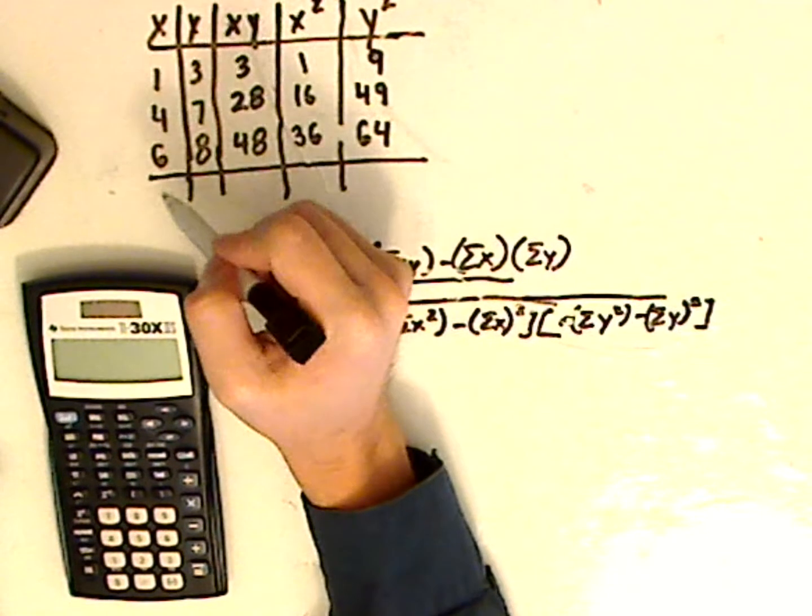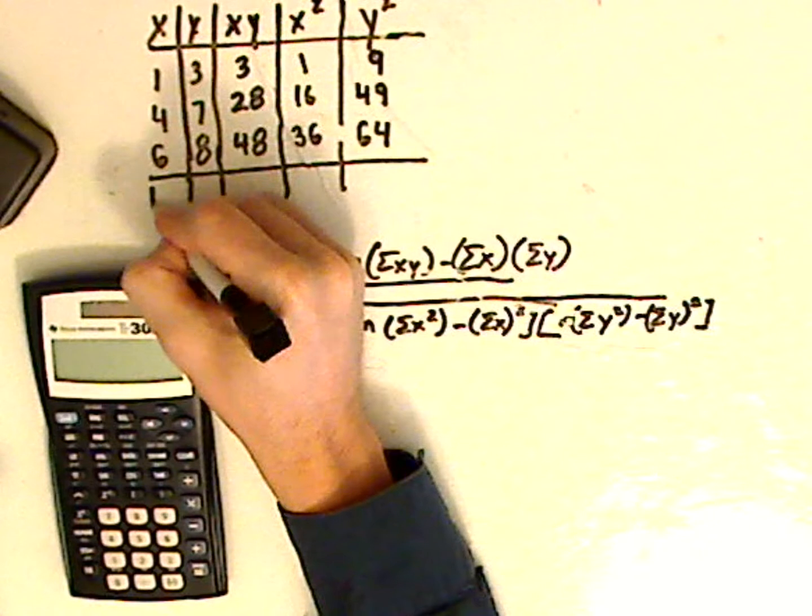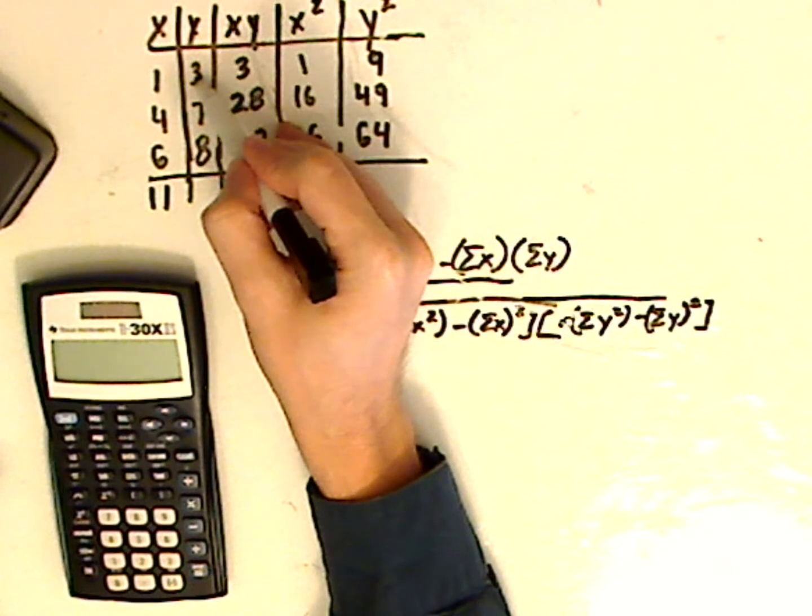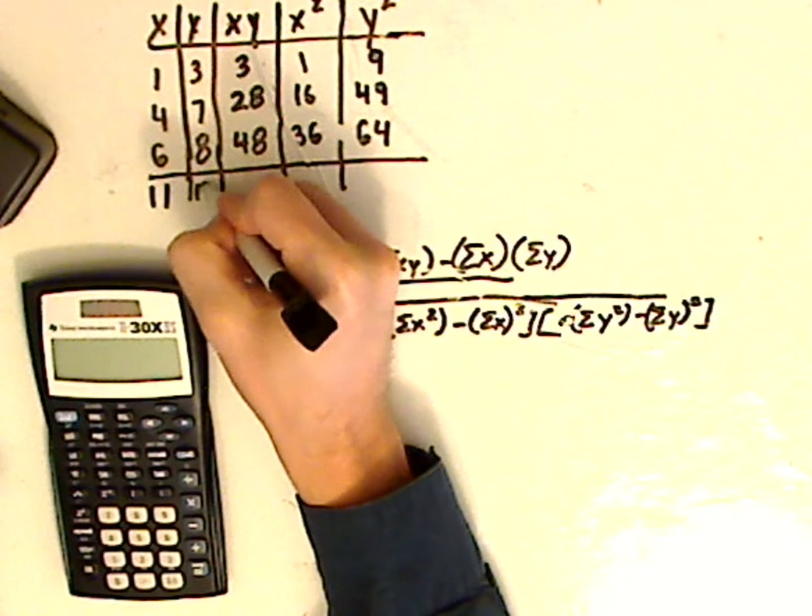Now you need the summation of all of these. So 1 plus 4 plus 6 is 11, 3 plus 7 is 10, 10 plus 8 is 18.